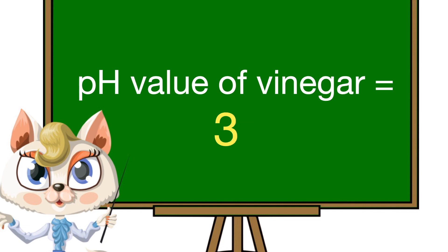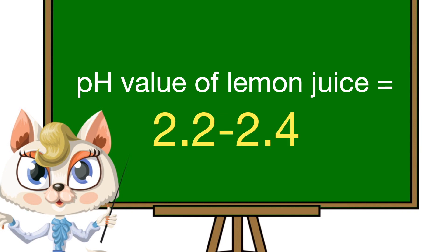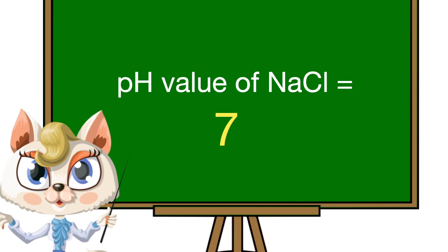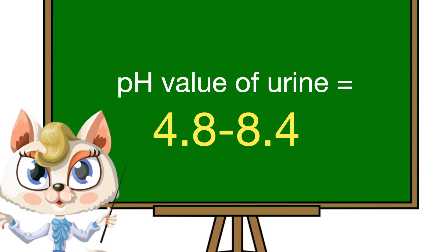The pH value of vinegar is 3. The pH value of human blood is 7.4. The pH value of lemon juice is 2.2 to 2.4. The pH value of NaCl is 7. The pH value of alcohol is 2.8. The pH value of urine for a healthy person is 4.8 to 8.4.